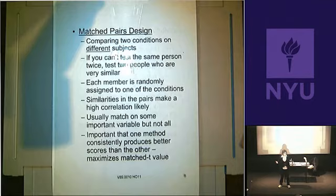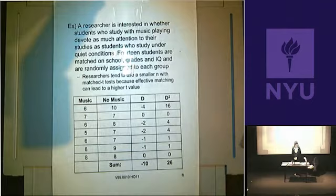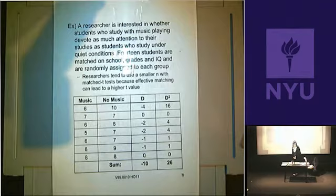That's a matched pairs design, and you analyze it with a matched t-test — it's the same thing. You use this when you don't have the ability to measure the same people more than once. Here's our example: a researcher is interested in whether students who study with music playing devote as much attention to their studies as students who study under quiet conditions. Fourteen students are matched on school grades and IQ.